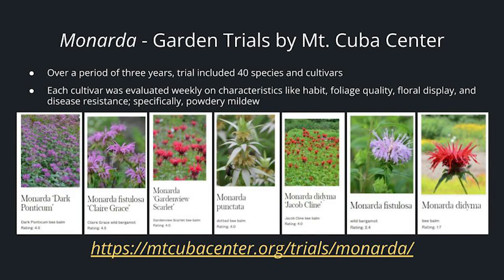Mount Cuba Center does garden trials — here's a snapshot of the one they did for the genus Monarda. Over three years, they trialed 40 species and cultivars, evaluating each weekly on characteristics like habit, foliage quality, floral display, and disease resistance — specifically for powdery mildew, a very common problem for Monarda. A hybrid performed equivalently to Monarda fistulosa Claire Grace, both ranked 4.5 out of 5. Monarda fistulosa Claire Grace is a selection from a garden in Mississippi where it was growing naturally without susceptibility to powdery mildew — that's why it was selected and brought into cultivation.